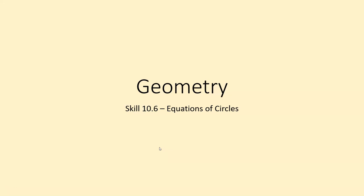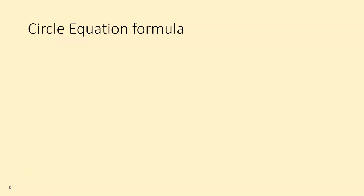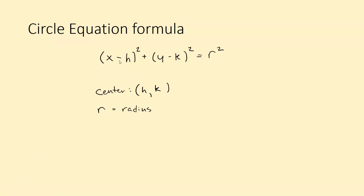Hello class, I am Mr. Sutton, and today we're going to be talking about skill 10.6, which is equations of circles. There is a generic circle equation formula, and that formula is x minus h quantity squared plus y minus k quantity squared equals r squared, where the center is the h value and the k value, without the negative sign, and r stands for radius.